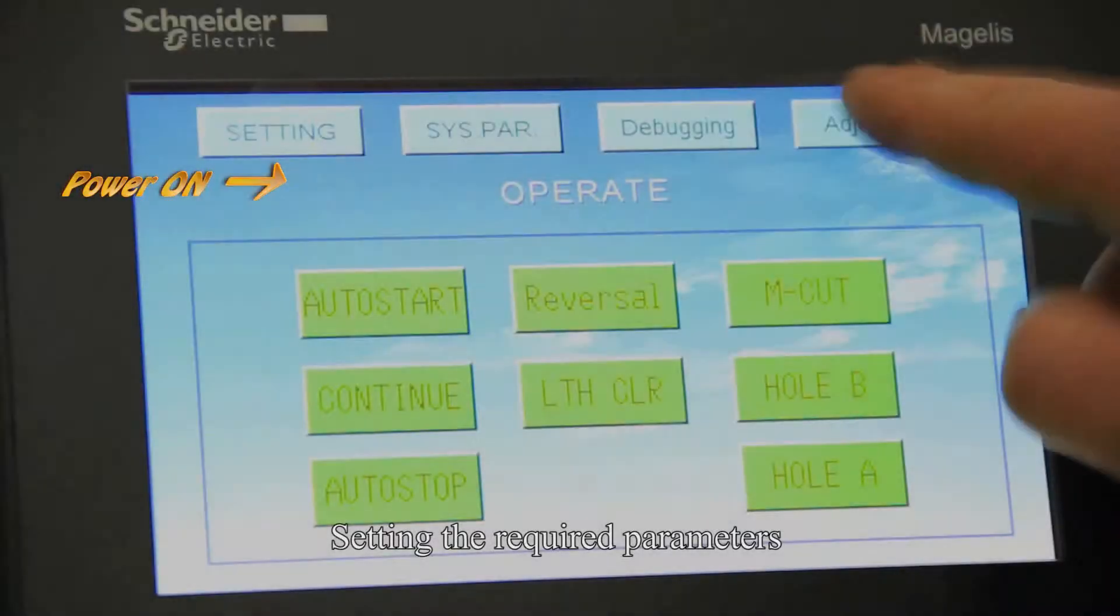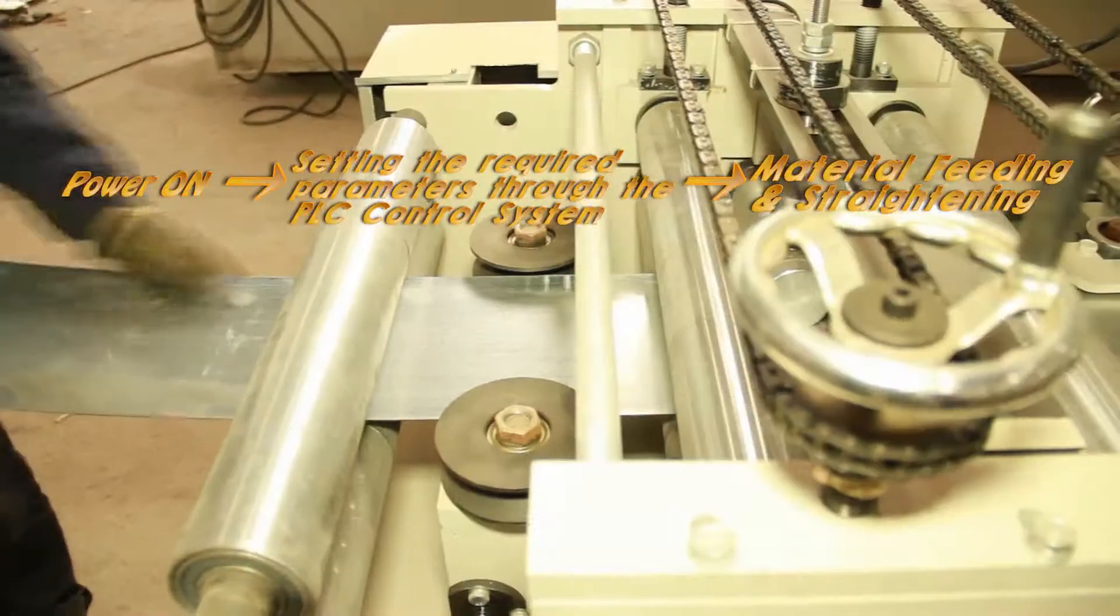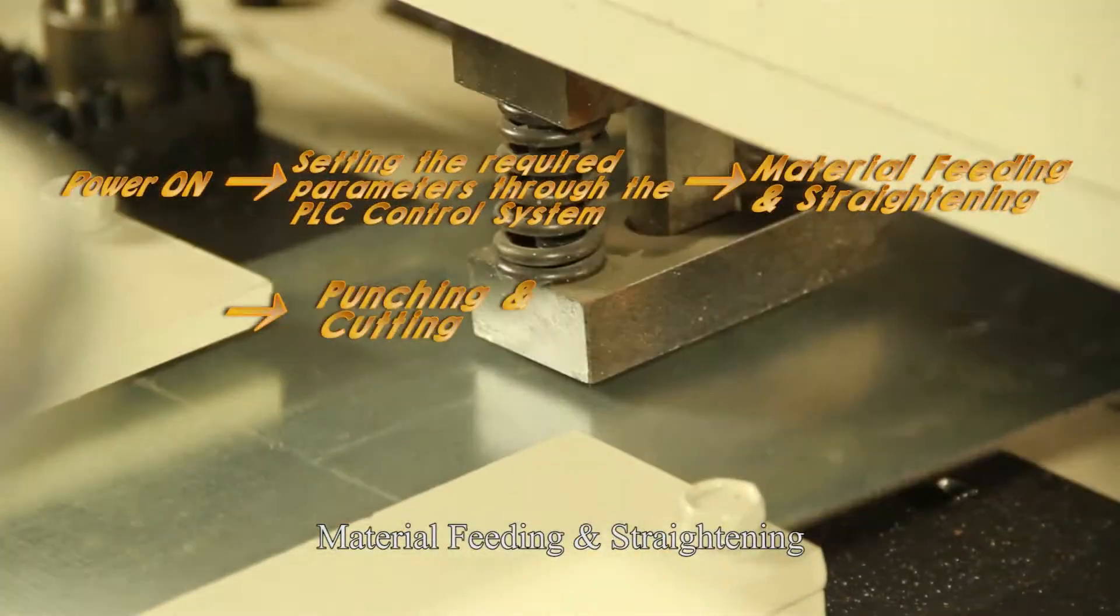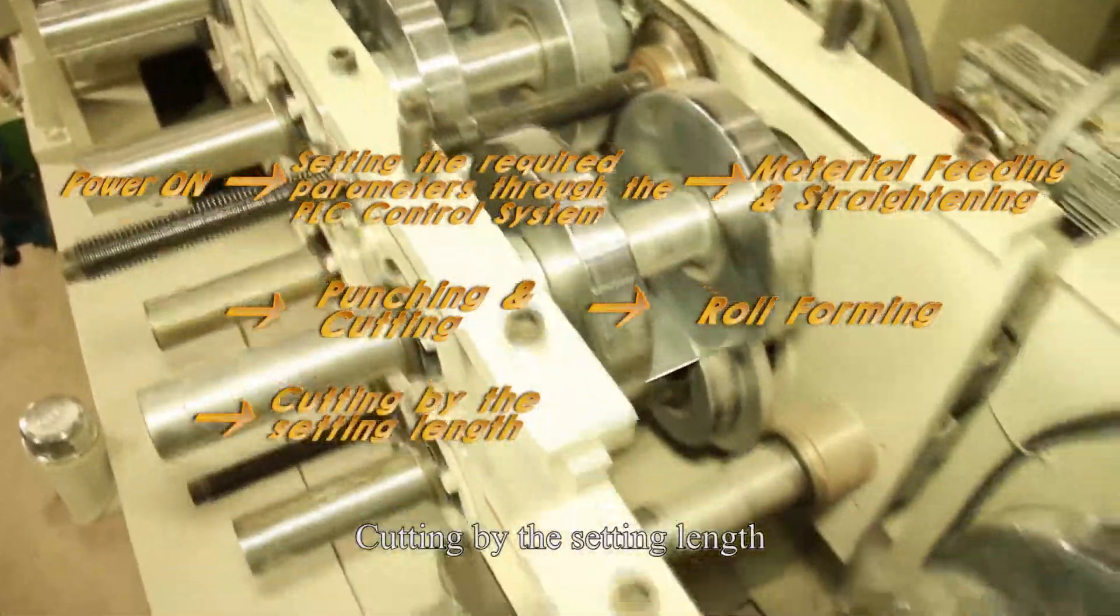Power on, setting the required parameters through the PLC control system, material feeding and straightening, punching and cutting, roll forming, cutting by the setting length, shaping and finishing product.